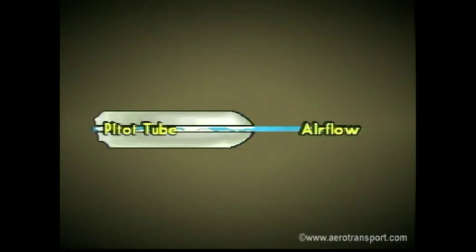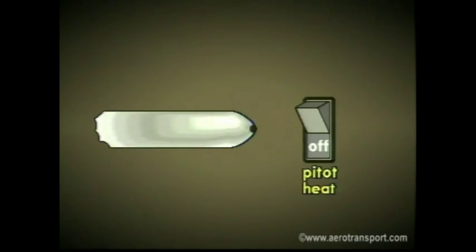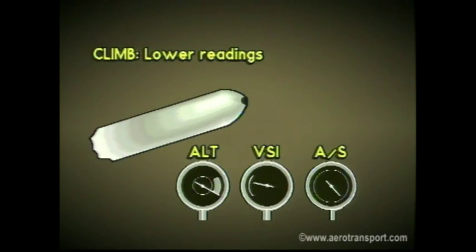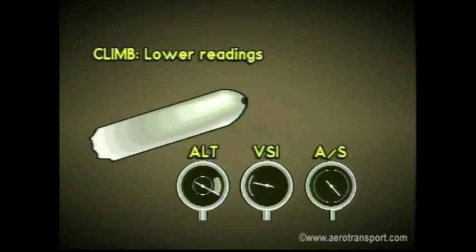As part of your pre-flight check, the pitot tube and static port opening should be inspected to make sure they are clear. Many planes have an electric heater to prevent ice buildup in the pitot tube; however, this system can fail. During a climb, a partially clogged pitot system will give you a lower than actual airspeed. It also causes lower readings on the vertical airspeed indicator and altimeter.